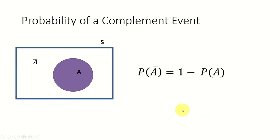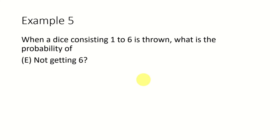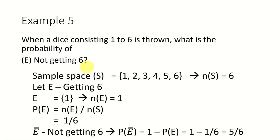Next, let's look at the probability of a complement event. If you know the probability of event A happening, the probability of event A not happening is 1 minus the probability of event A. It is common sense. So if the probability of event A is 1/6, the probability of event A not happening is 1 minus 1/6, which is 5/6. For example, the probability of not getting 6 is 1 minus 1/6, which equals 5/6.